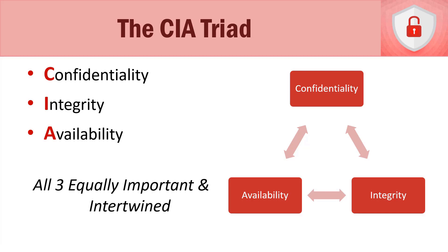When we think about cybersecurity, we think about confidentiality — we think about keeping our data secure — but there are two other vitally important aspects that really aren't as widely known, at least for people that are new to this field, and that's integrity and availability. When we combine all three of these together, they're called the CIA triad, and they all play an important role in information security. All three of them are intertwined, and it'll make sense as we progress through this lecture.